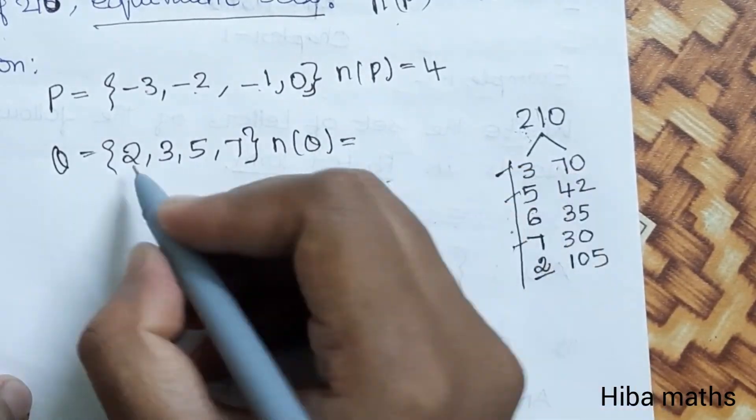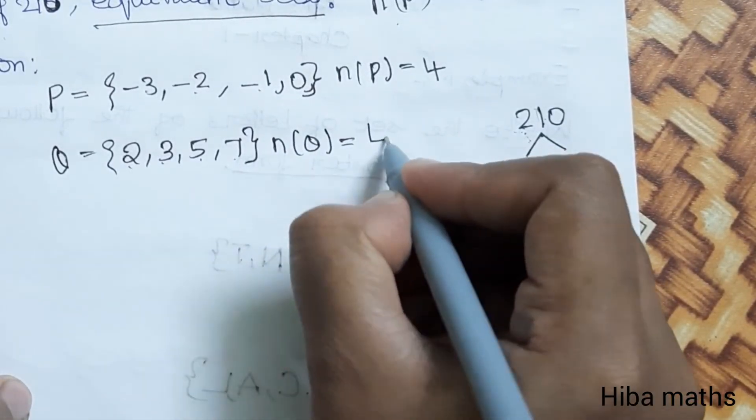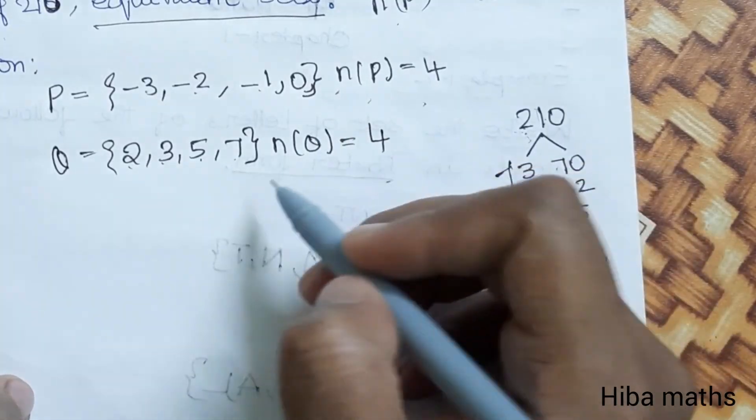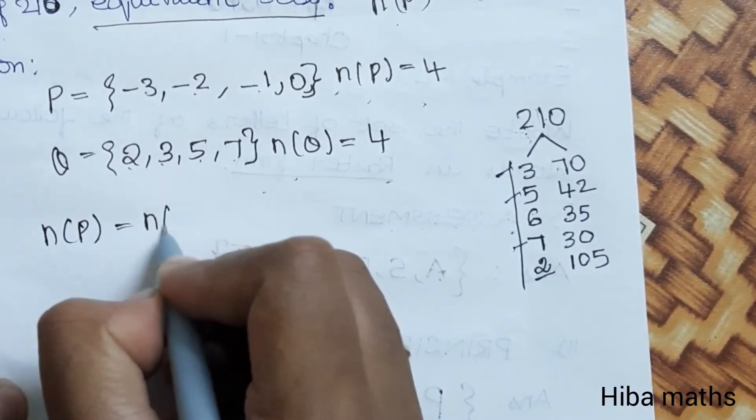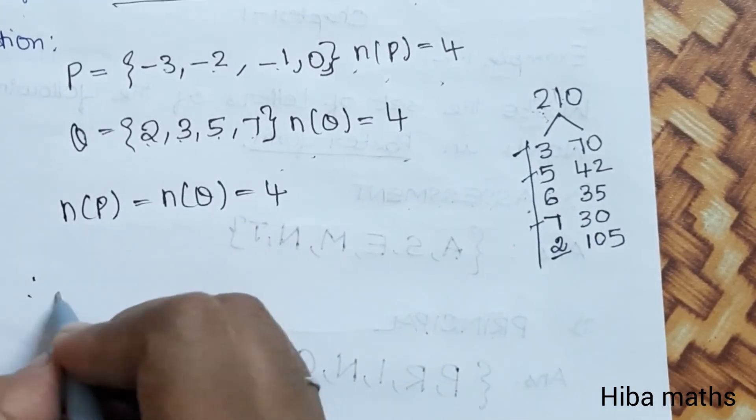Now n(Q) is 4. So n(P) is equal to n(Q) which is equal to 4.